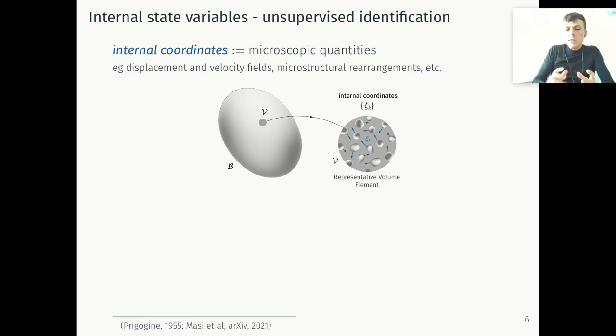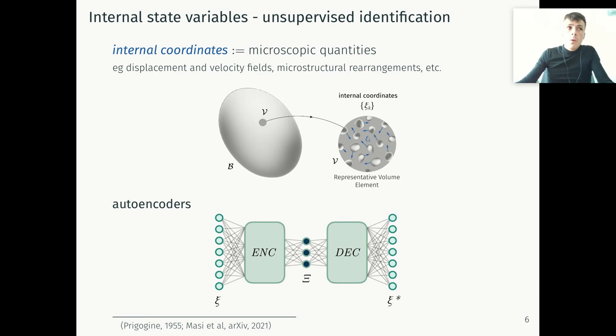As you can imagine, these internal coordinates for complex microstructure materials will span high dimensional spaces. So we'd like to be able to compress this information to be computationally efficient. This can be done by relying on autoencoders, a dimensionality reduction technique, in which we basically take the internal coordinate xi and parameterize them into a low dimensional space through an encoder, then reconstruct them with a decoder to their original shape. This is done by minimizing the so-called reconstruction error, that is the difference between xi star and xi. Nevertheless, as you can notice, by minimizing this reconstruction error, nothing will guarantee us that we're able to preserve the thermodynamic framework of this model.